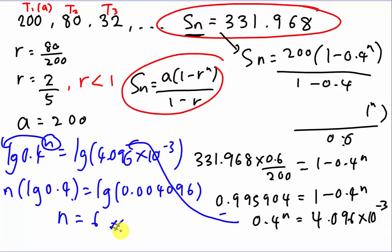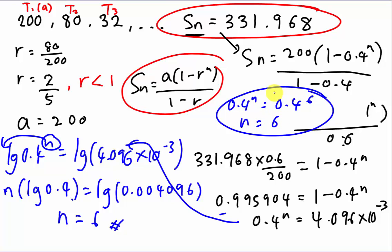This is how we solve a question like this. Alternatively, you can recognize that 0.4^n equals 0.4^6 and directly conclude n equals 6. Both methods are acceptable — just use whichever works best for you. I hope you can understand how to solve this question from my video. Thanks for watching.